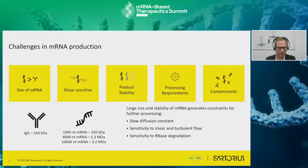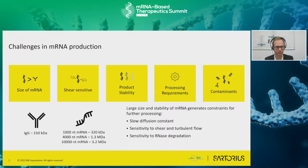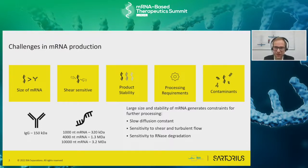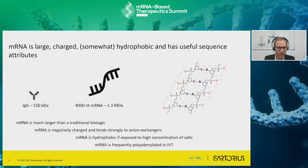These are extraordinarily large molecules that bring a whole host of processing challenges. They're shear sensitive. Stability is an issue and we need a stable cold chain. Processing challenges come partly from stability, partly from shear sensitivity, and partly from the large size. There are contaminants we can introduce in the process or that are product-related. But we can turn some of these challenges to our benefit.